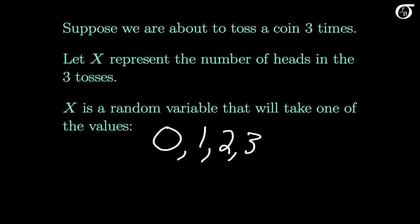But we do know it will take on one of these four possible values, and we can even work out the probabilities of each of these four values occurring. We usually represent random variables with capital letters near the end of the alphabet. Here I used x, but other letters like y and z are commonly used as well.